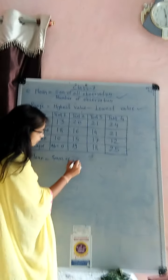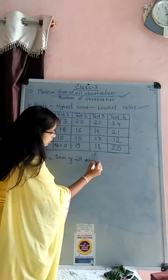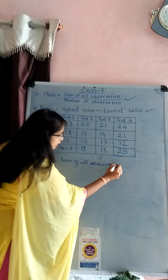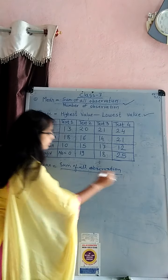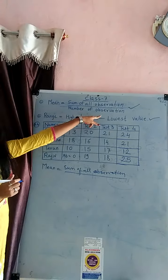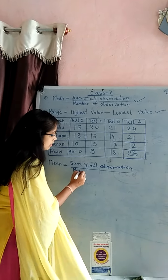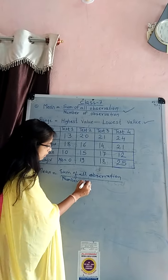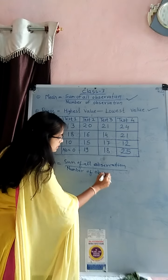sum of all observation divided by number of observation. So, right here, number of observation.